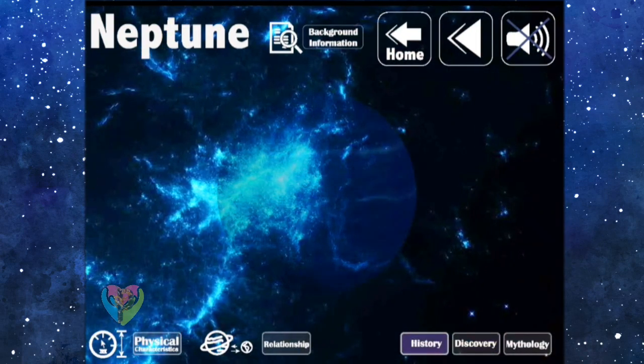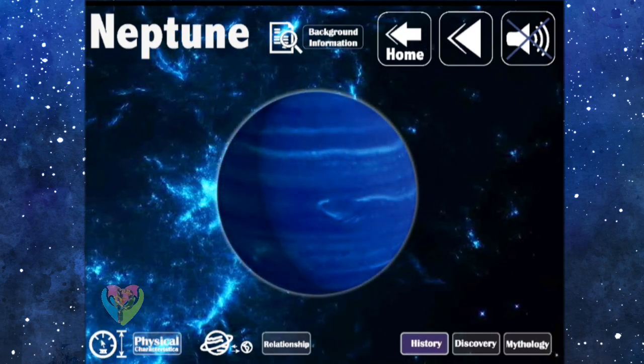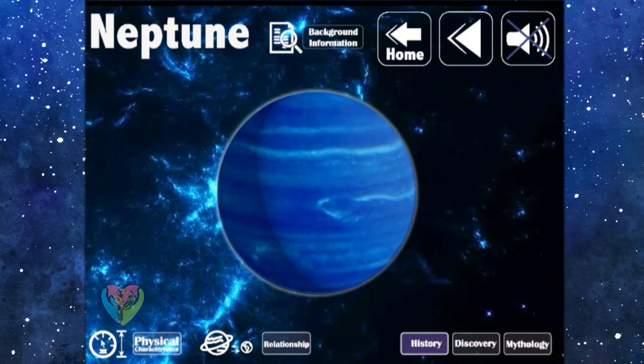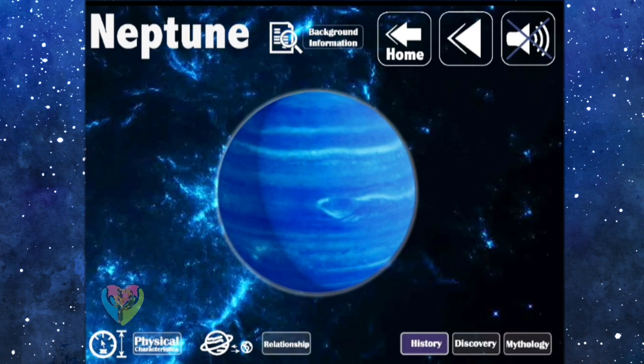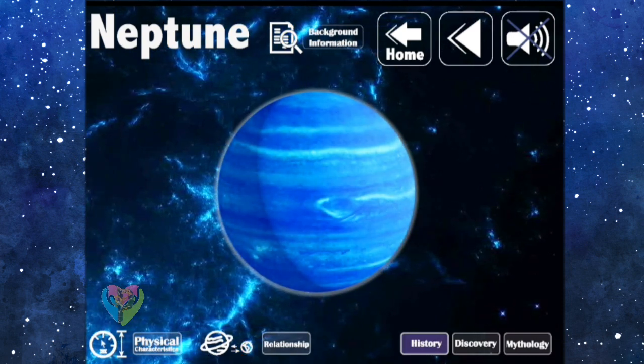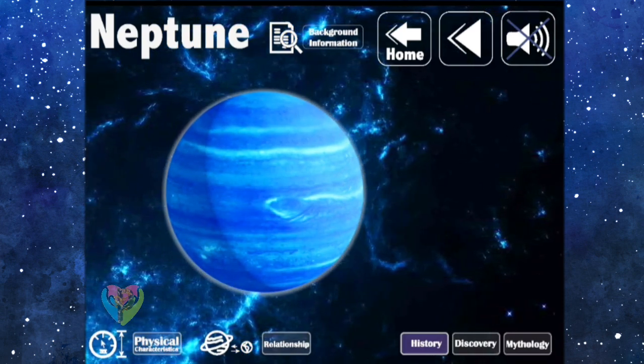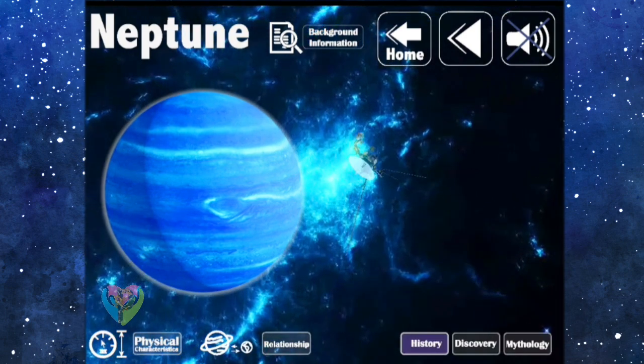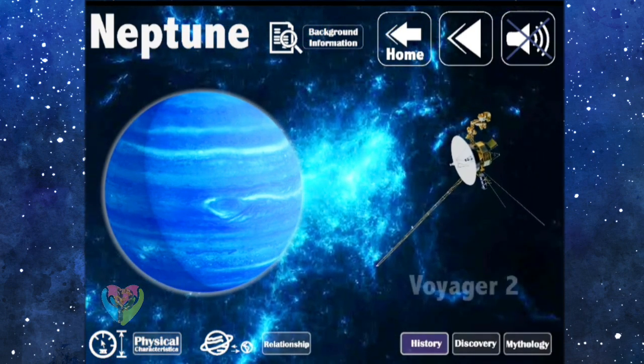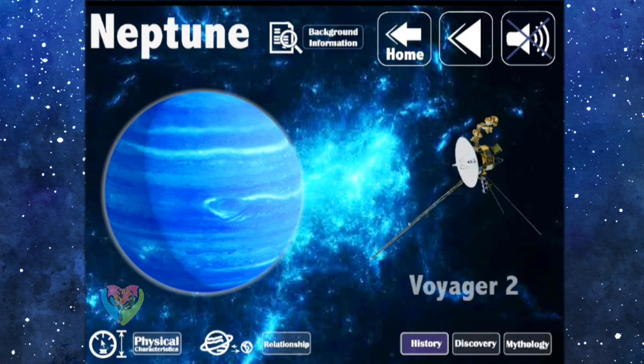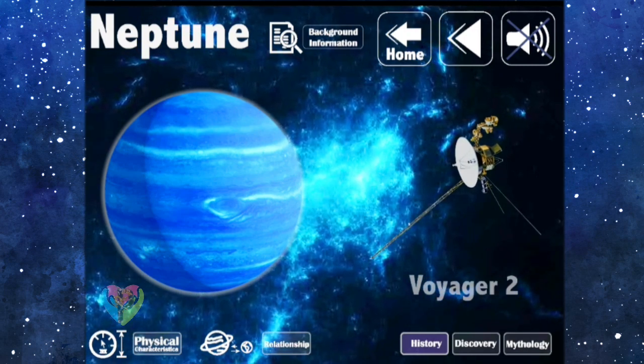Neptune is so far away from Earth, we cannot see it with the naked eye. When we use a large telescope, it can be seen as a flickering spot. What we know about Neptune nowadays is information obtained from Voyager 2, which orbited close to Neptune in 1989.